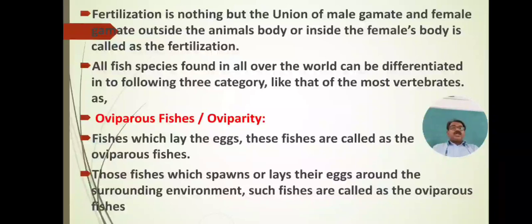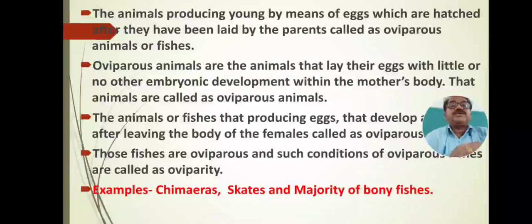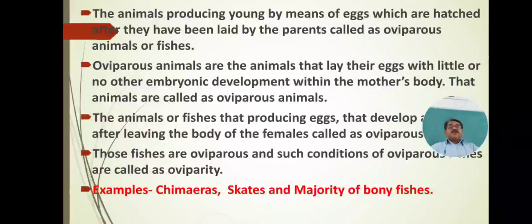Those fishes which spawn or lay their eggs around the surrounding environment — that may be fresh water or marine water — such fishes are called oviparous fishes. The animals producing young by means of eggs which are hatched after they have been laid by the parents — such animals are called oviparous animals or oviparous fishes.